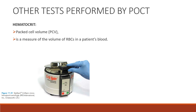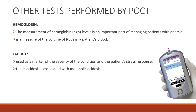Next is hematocrit, which is the packed cell volume — a measure of the volume of RBCs in a patient's blood. In testing for micro-hematocrit using capillary tubes, a POCT device called CritSpin can be used as a centrifuge to separate blood components and determine hematocrit levels. Hemoglobin measurement is an important part of managing patients with anemia and is also a measure of the volume of RBCs in a patient's blood.